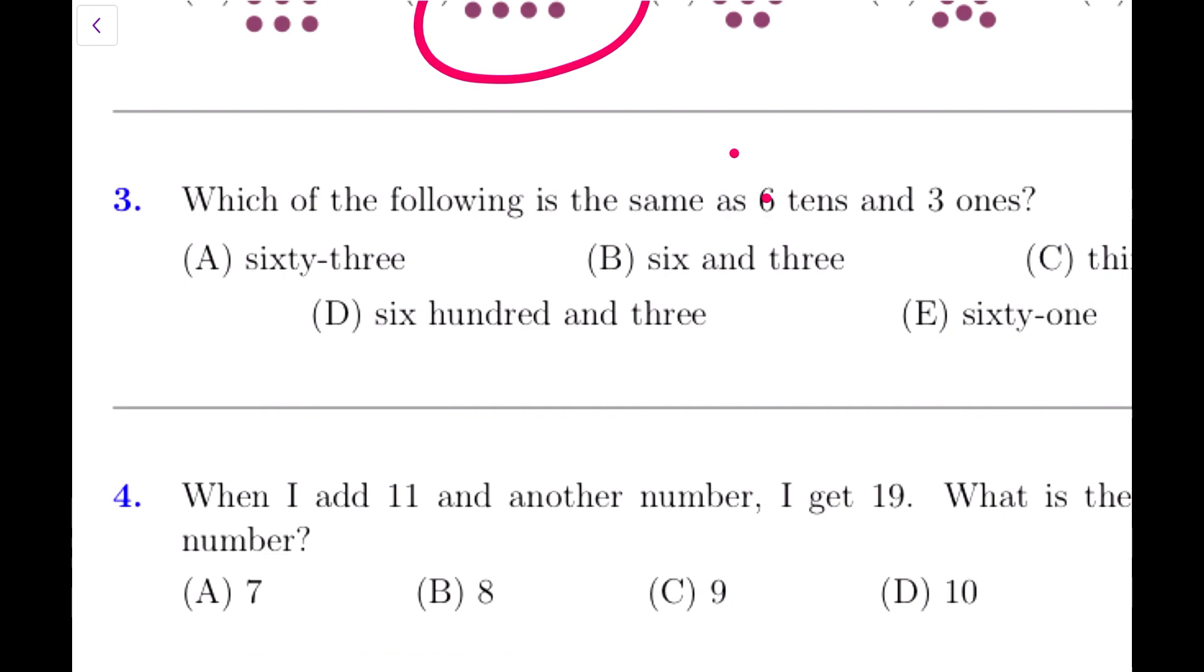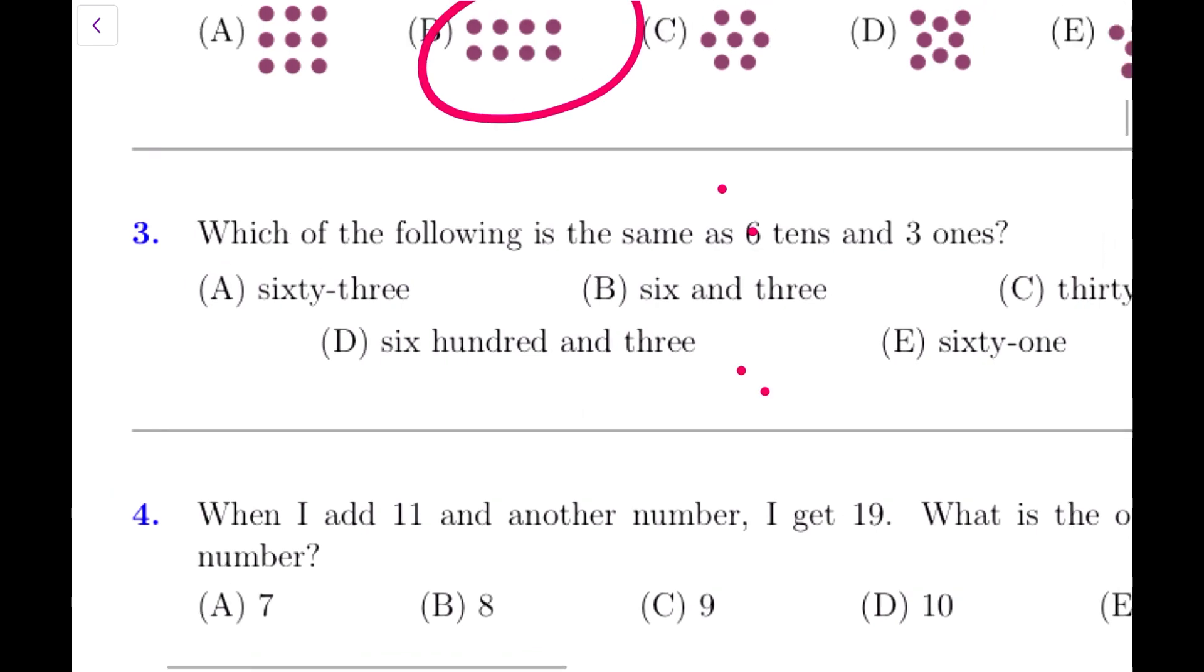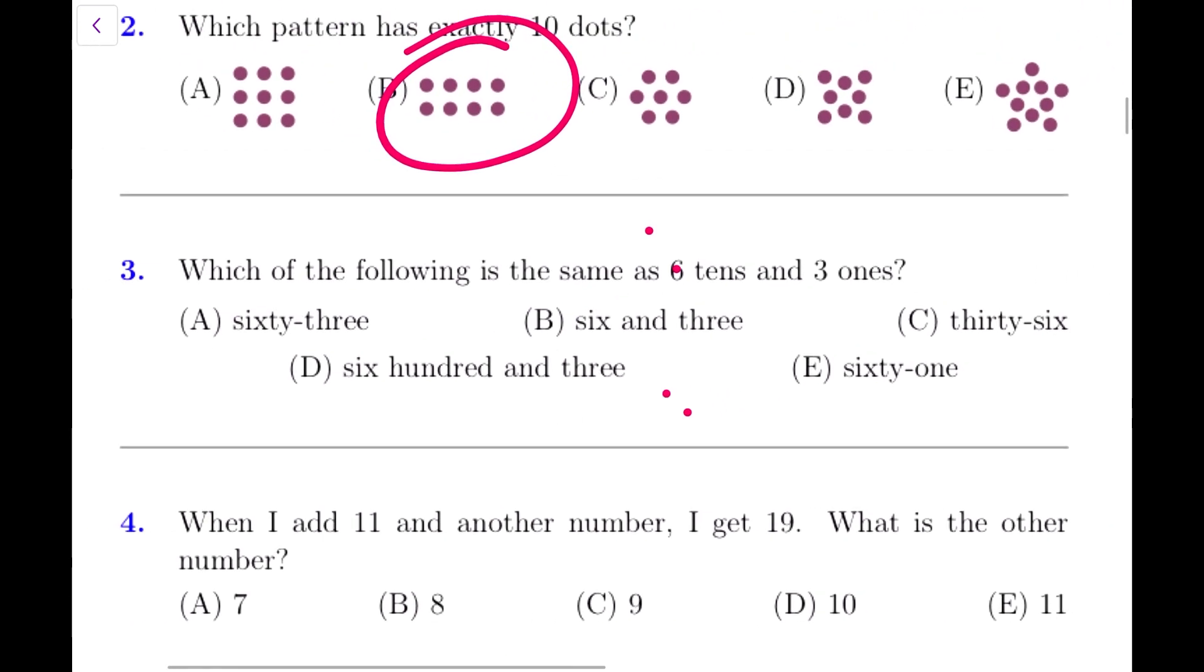Which of the following is the same as 6 tens and 3 ones? 6 tens means 60, 3 ones means 3, so the answer should be 63. It's right there, A. 63, that's the answer.